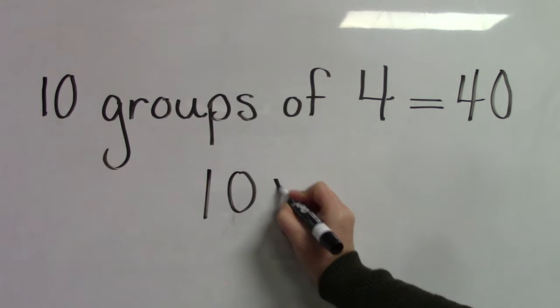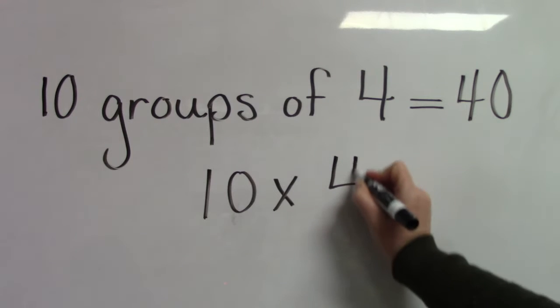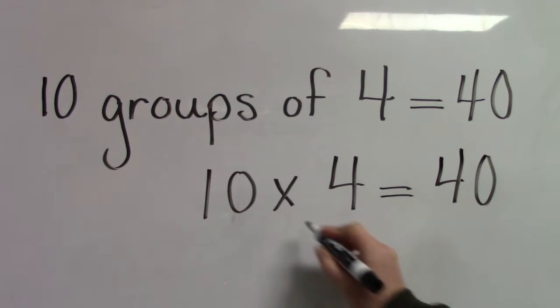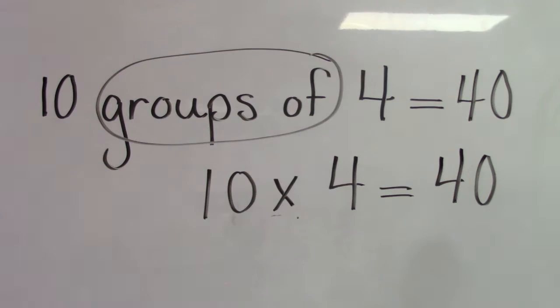10 and then the multiplication or times symbol, which is an x. 10 groups of four equals 40. Our multiplication sign or the x means groups of.